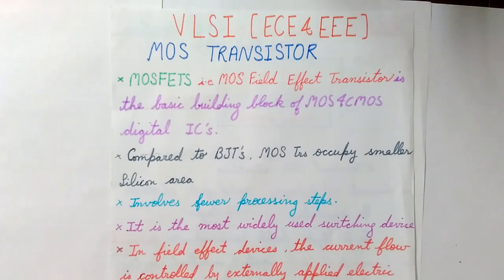Today I'll be discussing about the MOS structure, and in the coming videos you'll see in more detail. So what are MOSFETs? They are actually field effect transistors and they are the basic building blocks of the MOS and CMOS digital ICs.